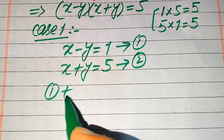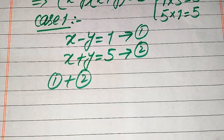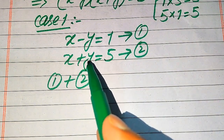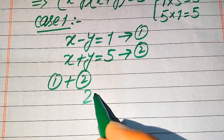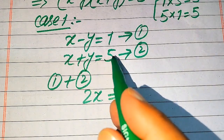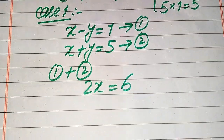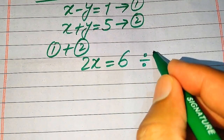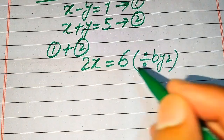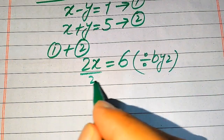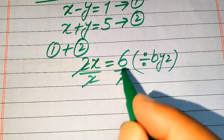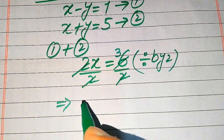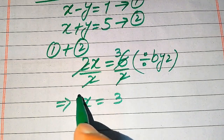First we add equation 1 and equation 2. When we add these two equations, the negative and positive y values cancel out. We get x plus x, which is 2x, and 1 plus 5 equals 6. To solve for x, we divide both sides by 2. The 2s cancel and we get 2 times 3 equals 6, so x equals 3.